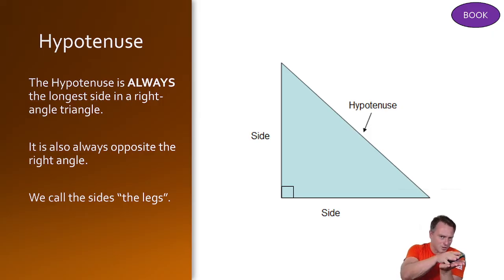Now the reason why it's opposite the right angle if you think about the hypotenuse as it gets bigger and bigger it increases the length of the triangle side. So if you have a small angle it makes a small side but if you make a big angle it makes a big side. If you have a right angle it makes a really big side.